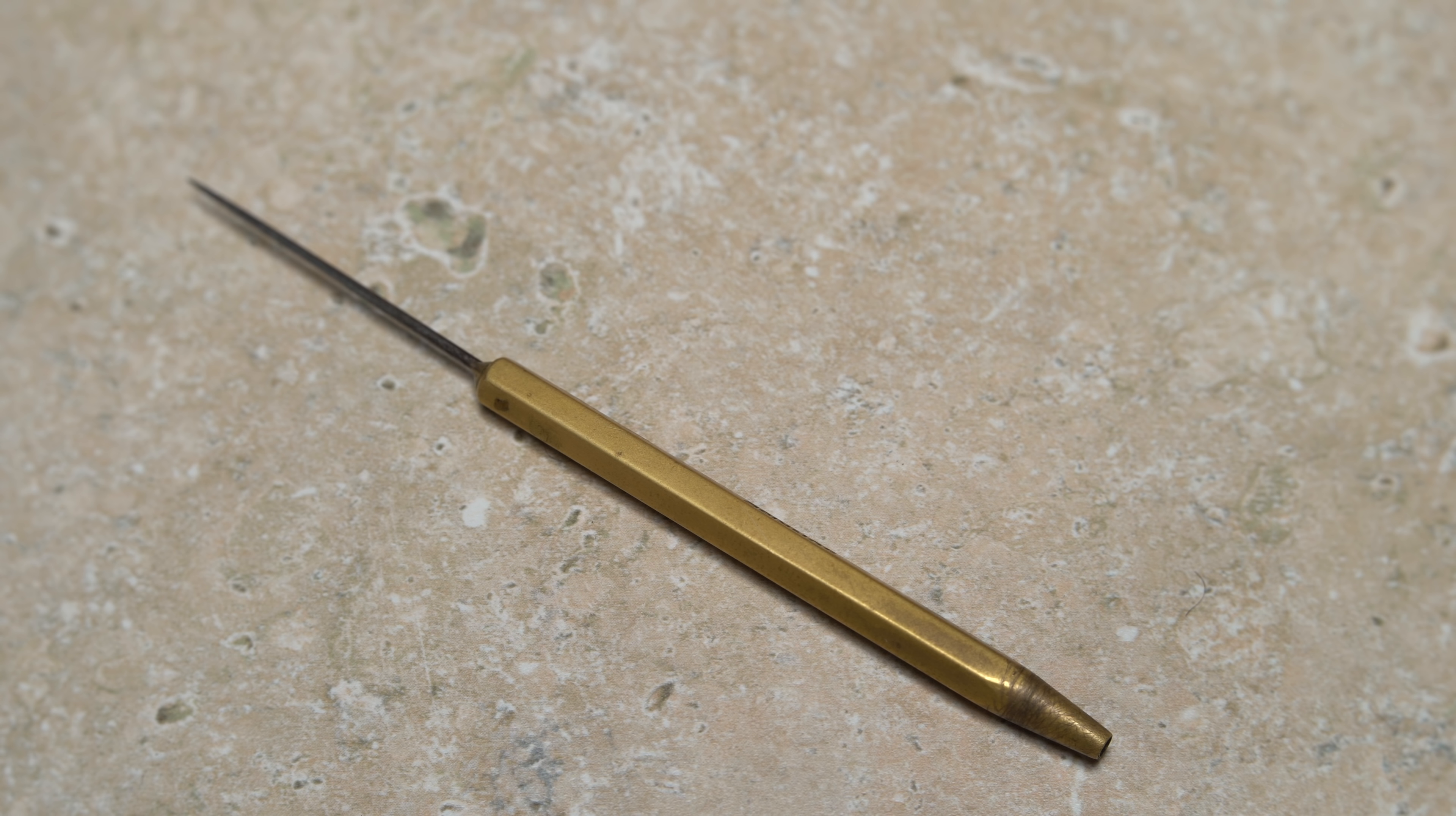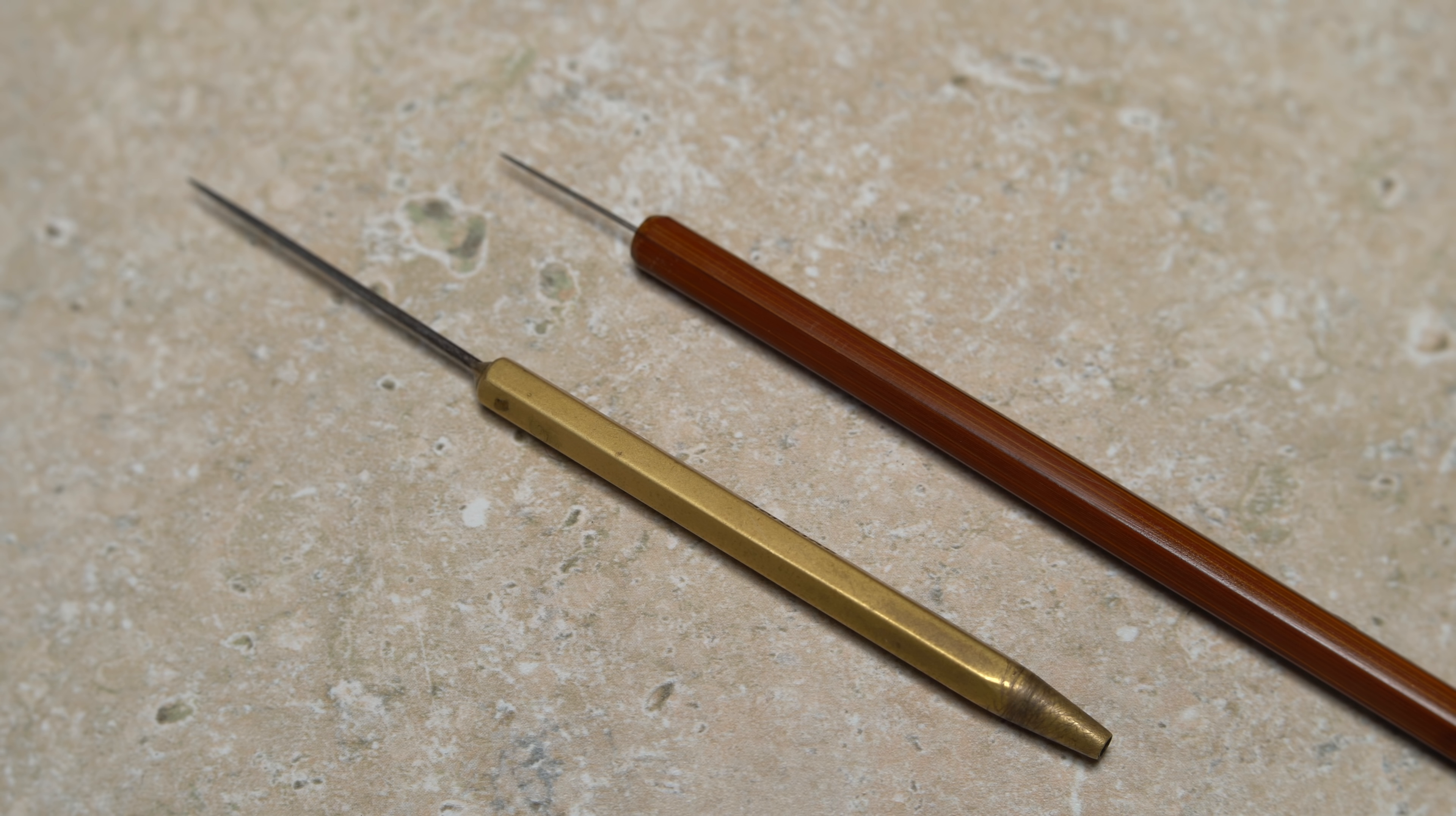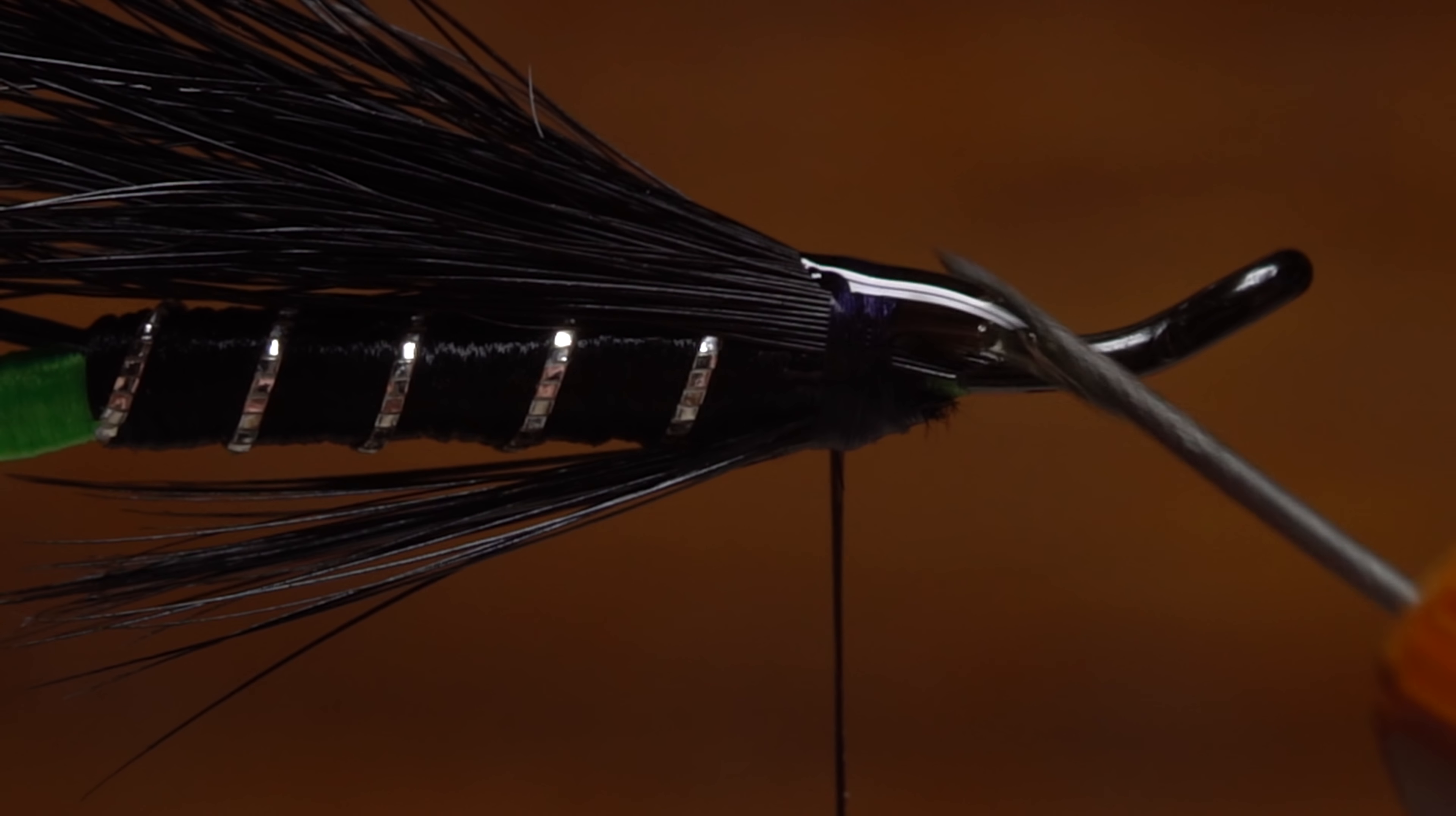One of my favorite fly tying tools is one I didn't know I needed until it was given to me by friend and fellow New Jersey fly tier Matt Grobert. It's a bodkin or dubbing needle with a really fine tip. Although it doesn't replace my normal bodkin, it does several things much better, including rearranging hackle fibers and applying minuscule amounts of adhesive to very specific locations.